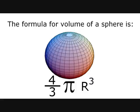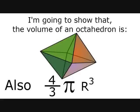Anyone who has taken a geometry course will recognize the formula for volume of a sphere as being 4 thirds pi r cubed, but I'm going to show that the volume of an octahedron can be calculated using the same basic formula of 4 thirds pi r cubed, and this is something that has never been done before.